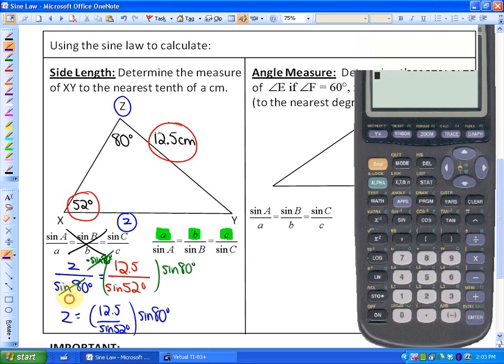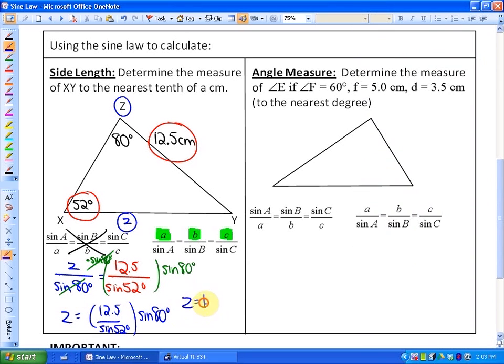So there we go. Our answer appears to be 15.6. And another thing that's always useful, so z in this case is equal to 15.6 centimeters. We can also see from the picture that that seems to make relative sense. This length here would be 15.6.